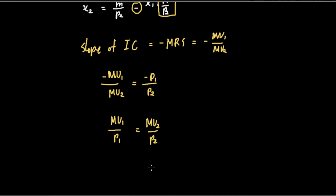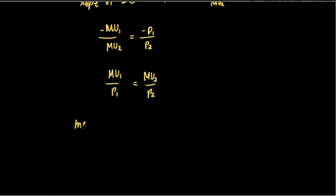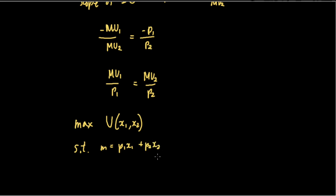There is intuition behind MU1 over P1 equals MU2 over P2, but we won't discuss that here. So MU1 over P1 equals MU2 over P2 is our second first order condition for utility maximization. Another way to solve this is to use the Lagrangian method. Just know that when you maximize utility subject to the budget constraint — M equals P1·x1 plus P2·x2 — you should get the same results.